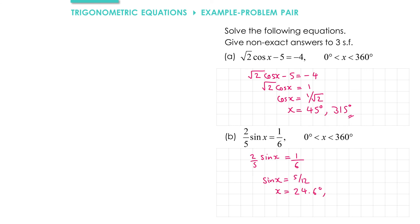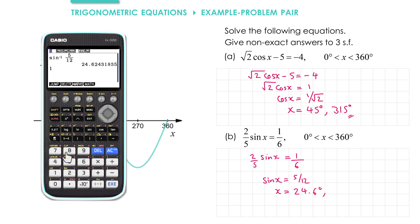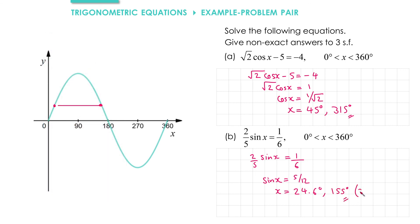We use the symmetry property to find a second solution. Looking at the graph, if our first solution is around 24.6 degrees, we're going to get a second solution close to 180, and we get that by doing 180 minus 24.6. Rounding to three significant figures, we get 155 degrees.